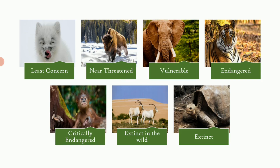The next category is 'near threatened.' These are animals, plants, or fungi which are likely to be threatened in the near future. Examples include the ball python, violet plants, and shown here is the plains bison. These species are placed in the near threatened category because if we do not take care, they may become threatened in the future.